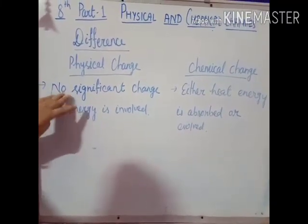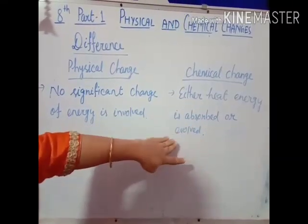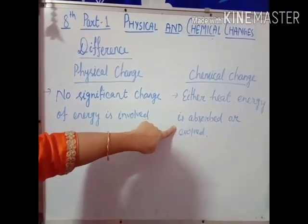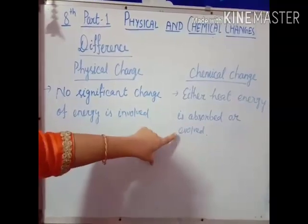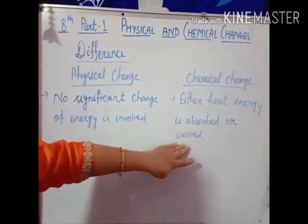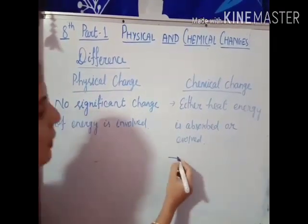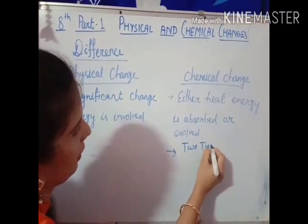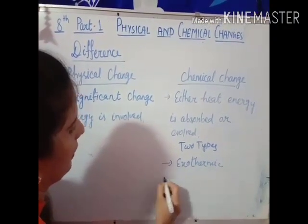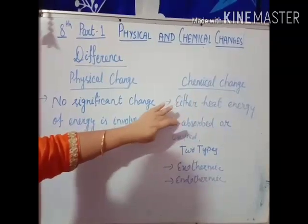The last difference is that in physical change, no significant change of energy is involved; but in chemical change, heat energy is either absorbed or evolved. Based on whether heat energy is absorbed or evolved, chemical changes are further of two types: one is exothermic and another one is endothermic.